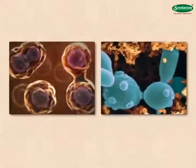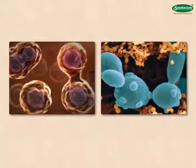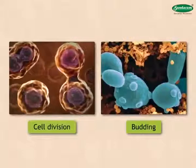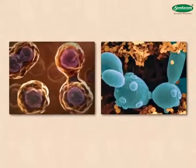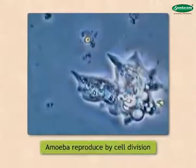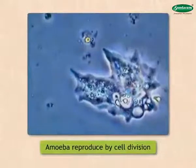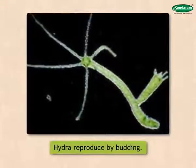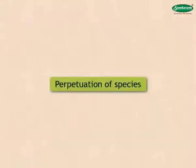Now let us learn about asexual reproduction in animals. Just as reproduction takes place in plants by cell division and budding, in a similar way unicellular animals like amoeba reproduce by cell division. In animals like hydra, reproduction takes place by budding.